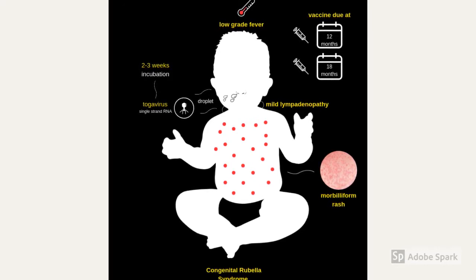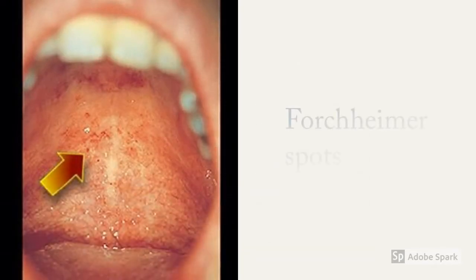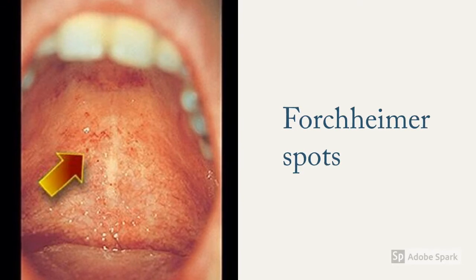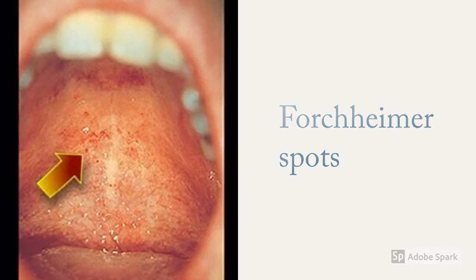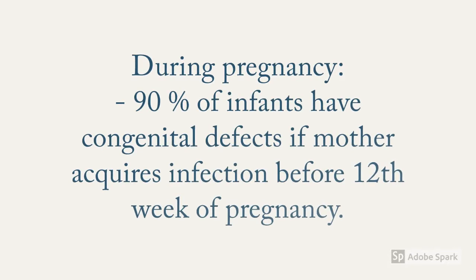One can similarly see the morbilliform rashes beginning from the face and then spreading towards the trunk. In case of infection in pregnancy, the neonates may present with congenital rubella syndrome. Forchheimer spots in the soft palate are present in about 20 percent of people with rubella; however, they are not diagnostic of rubella, as similar spots can be noticed in scarlet fever and measles.